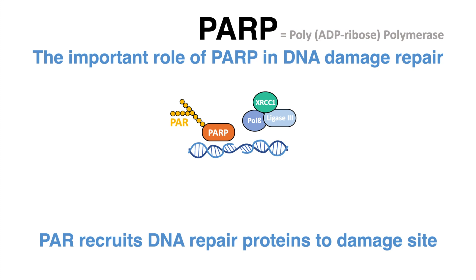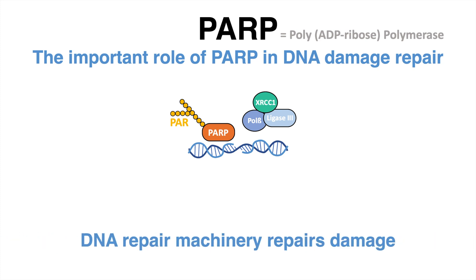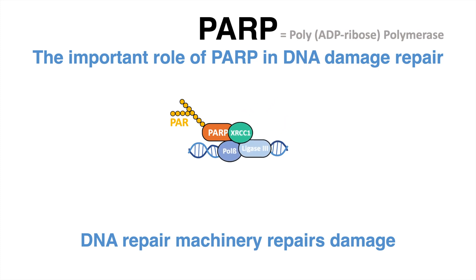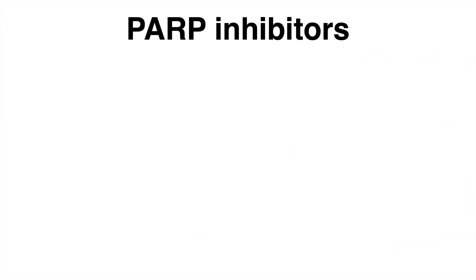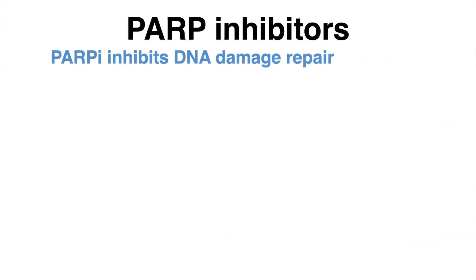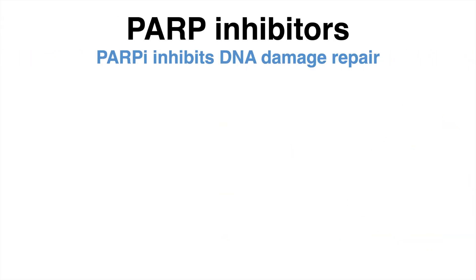This molecule signals the recruitment of DNA repair proteins. The members of this DNA repair machinery can successfully repair the single-strand break. PARP is an extremely important player to prevent damage in a normal cell. In cancer cells, however, DNA damage might be exploited.